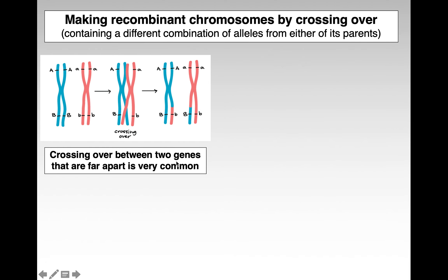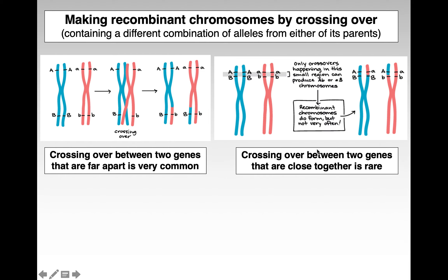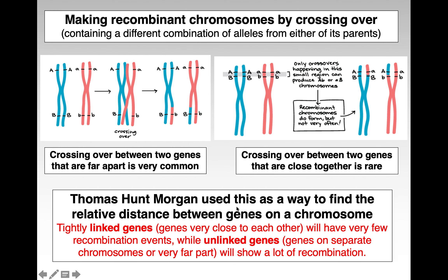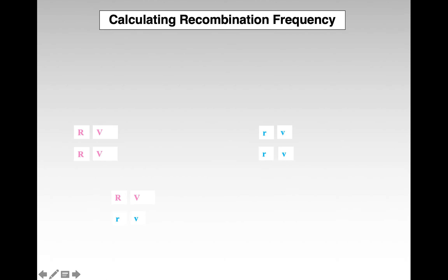Crossing over occurs in prophase one of meiosis, between replicated homologous chromosomes, where you get genetic swapping. It increases genetic variation. If genes are unlinked or very far apart, crossing over occurs and it doesn't change the outcome. If you have gene linkage, in order to get all the different kinds of gametes, crossing over would have to happen right in that little place, and that is rare. Thomas Hunt Morgan used this to map where genes are on a chromosome and how far apart they are.